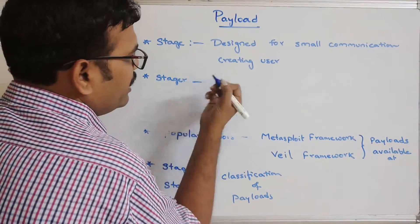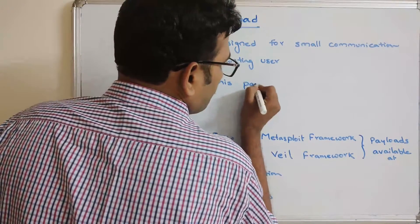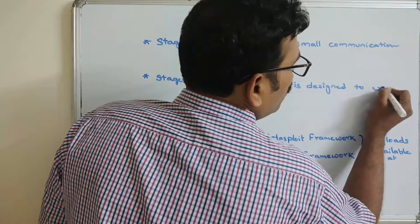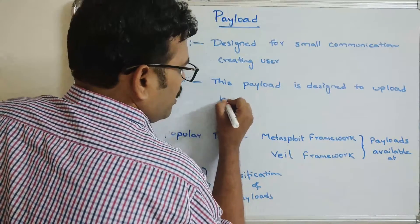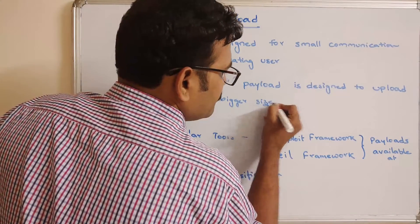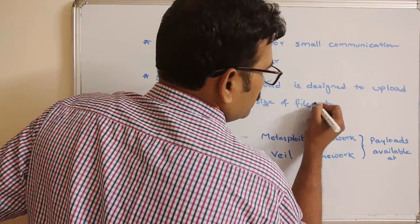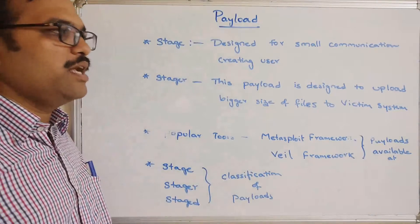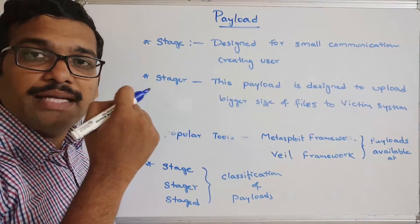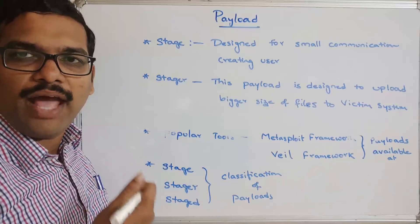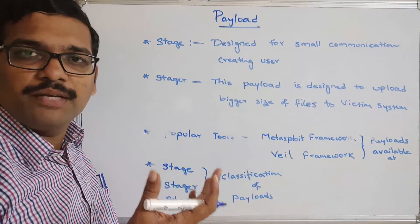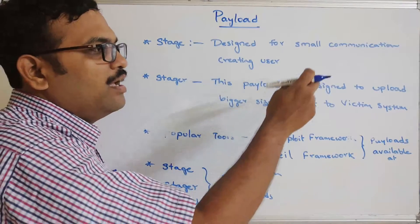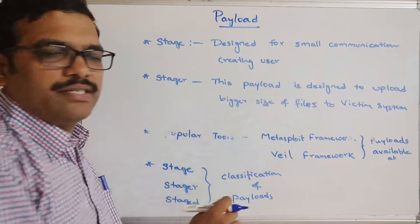The second category is the Stager module. This payload is designed to upload bigger size files to the victim system. Once the exploit is done and the payload is set, the complete access of the victim system comes under the hacker's control. The hacker can automatically upload files to the victim system. So the Stager payload is designed to upload larger size files to the victim system.